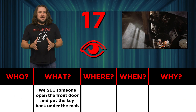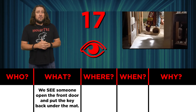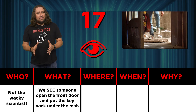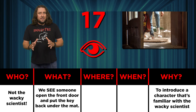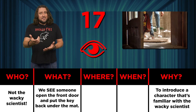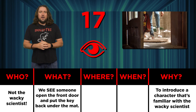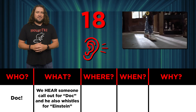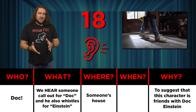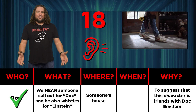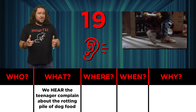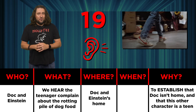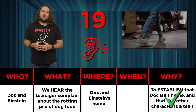Number seventeen, we see the front door slowly open and someone puts the key back under the welcome mat before entering. This tells us the character is most likely not the person who lives there, but is at least familiar with the owner since they knew about the spare key under the mat. Number eighteen, we hear him call out the name 'Doc' and whistle for Einstein, which confirms he's friends with the person who lives there — now confirmed to be named Doc. Number nineteen, we hear the teenager's vocal disgust over the rotting pile of dog food, all but proving Doc and Einstein haven't been home in quite some time, and his voice helps establish that he's probably in his teens.